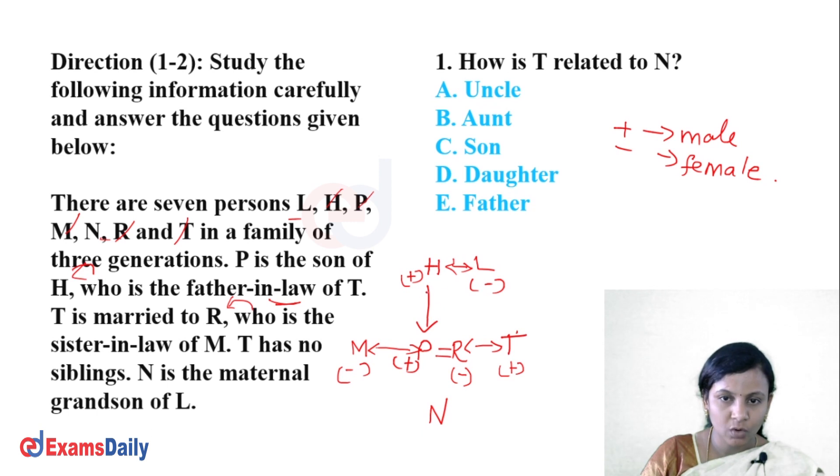So we have P and R. R belongs in the family diagram. T is R's spouse, and N is their child, making T the father.